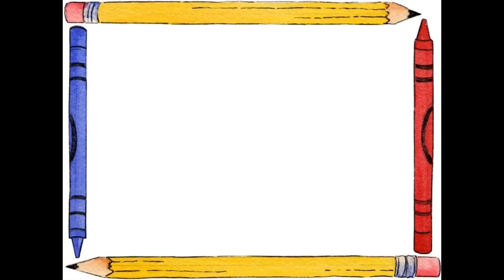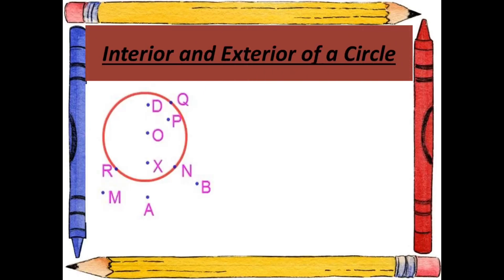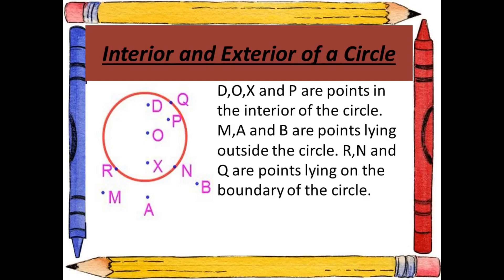The next topic is interior and exterior of a circle. In the circle shown, points P, O, and X are in the interior of the circle. Points M and A and B are lying outside the circle. Points R, N and Q are lying on the boundary of the circle.